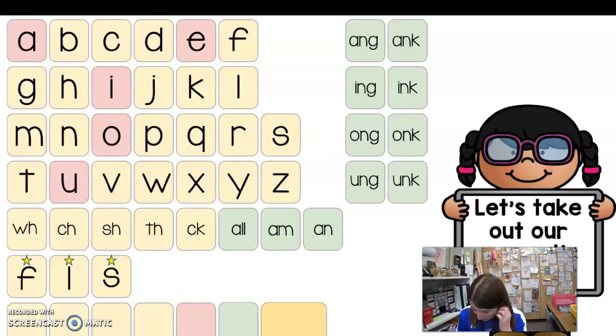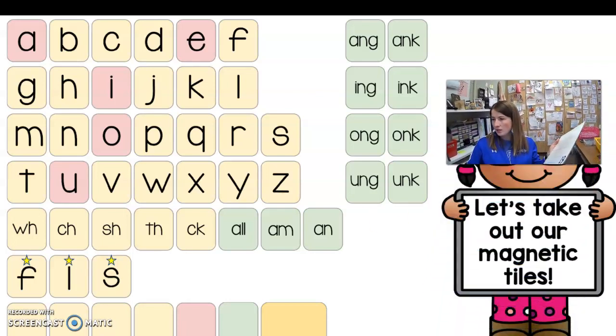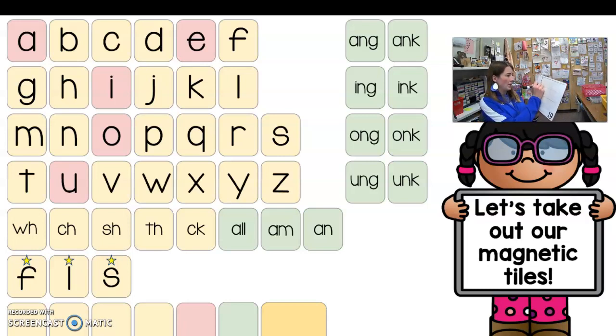All right, we're gonna make some words. Are you ready? The first word we're gonna make is hangs. Let's tap it out. Can you guys get your tappers ready? Remember when we tap, ang is gonna be three fingers together because it's glued together. So ready, hangs. All right, here we go. The next one is kings.